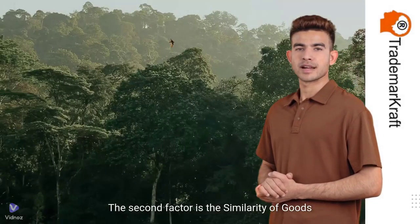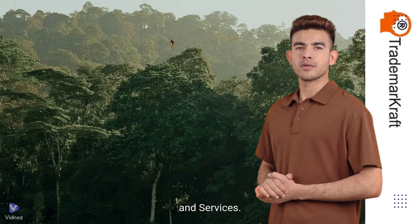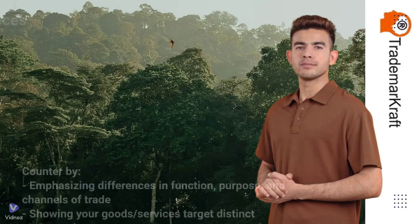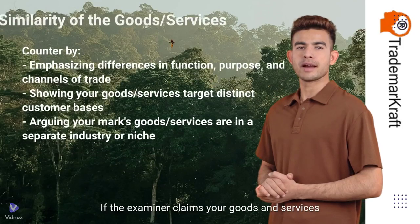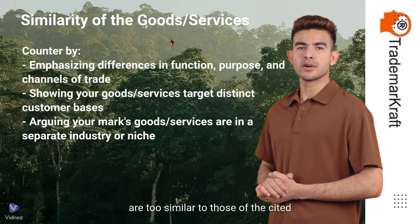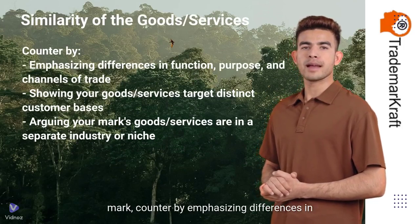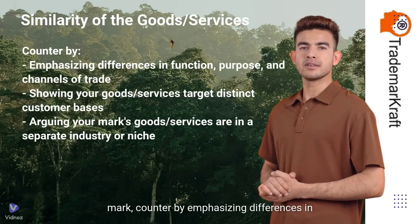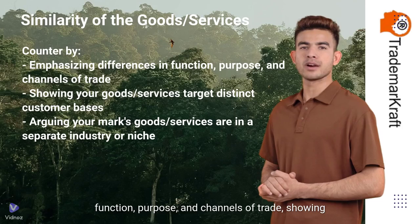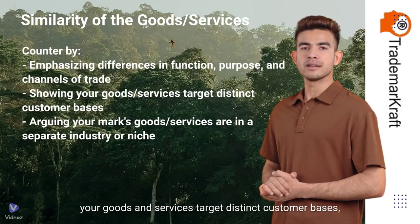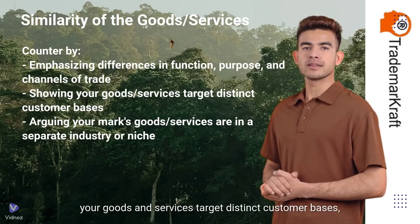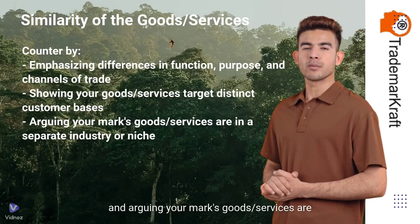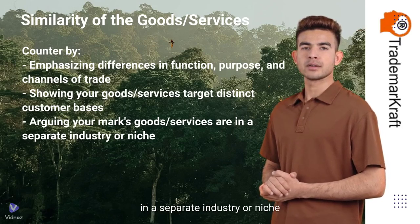The second factor is the similarity of goods and services. If the examiner claims your goods and services are too similar to those of the cited mark, counter by emphasizing differences in function, purpose, and channels of trade, showing your goods and services target distinct customer bases, and arguing your mark's goods and services are in a separate industry or niche.